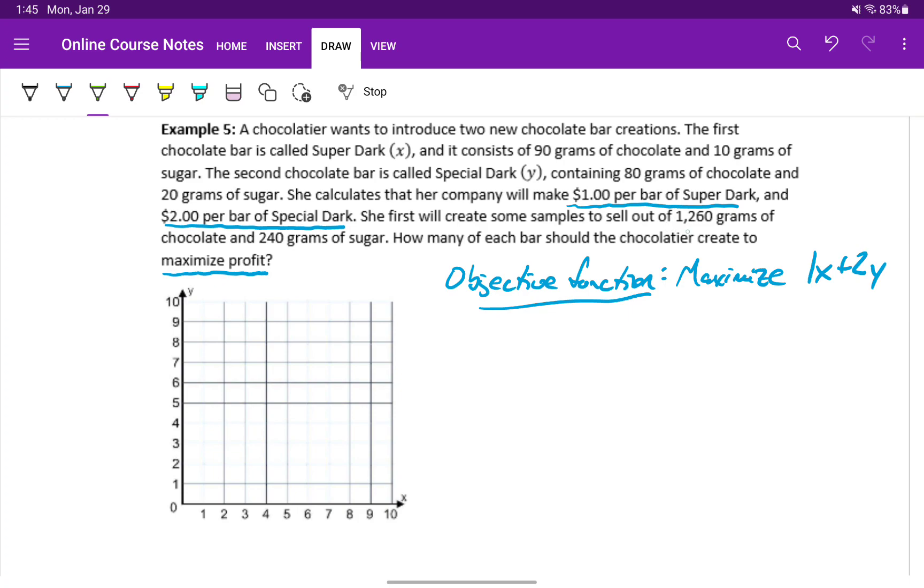We're also told that she has a fixed amount of chocolate to use. Looking at the two types of bars, one uses 90 grams of chocolate, and the other uses 80 grams of chocolate. So that means one inequality statement would be 90x plus 80y has to be less than or equal to the amount of chocolate that she has on hand, that 1260 grams.